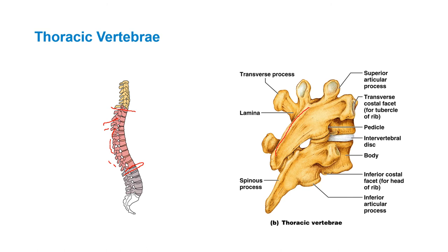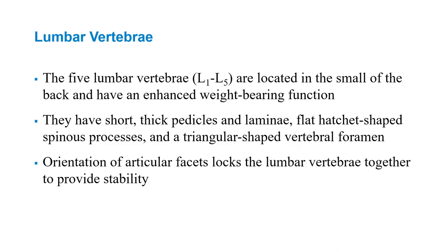Go through the parts of the thoracic spine as an exercise. The lumbar vertebrae — there are five — are located in the small of the back. They have thick, short pedicles and broad laminae for enhanced weight bearing. The facets lock the lumbar spine together to provide stability, and they're oriented more sagittally for flexion and extension.